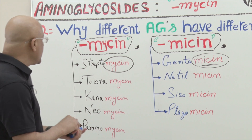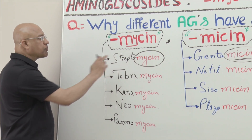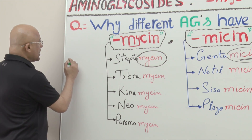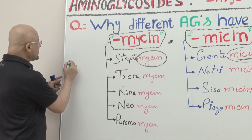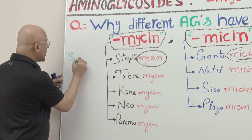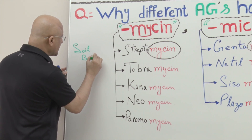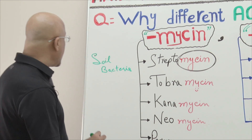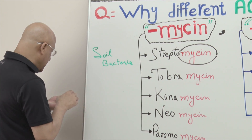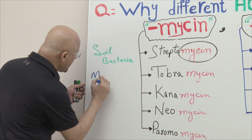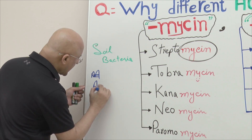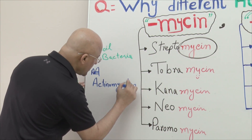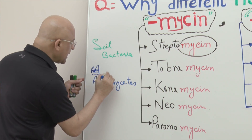The first aminoglycoside to be discovered was streptomycin. These aminoglycosides were discovered, isolated, and derived from soil bacteria — a group of gram-positive bacteria very abundantly present in nature. As a group, these soil bacteria are called actinomycetes.